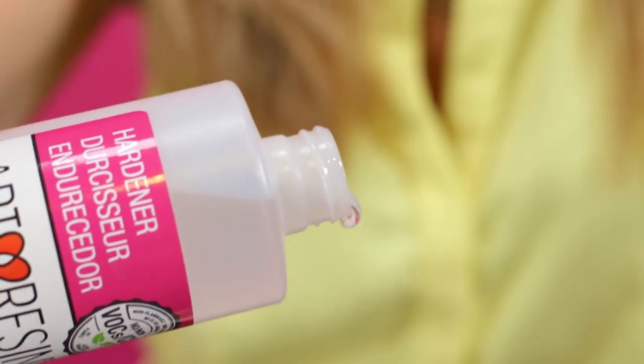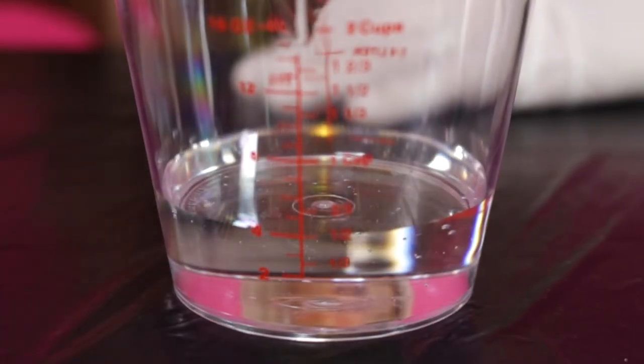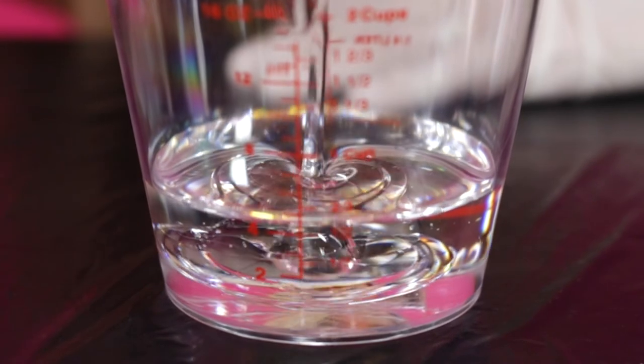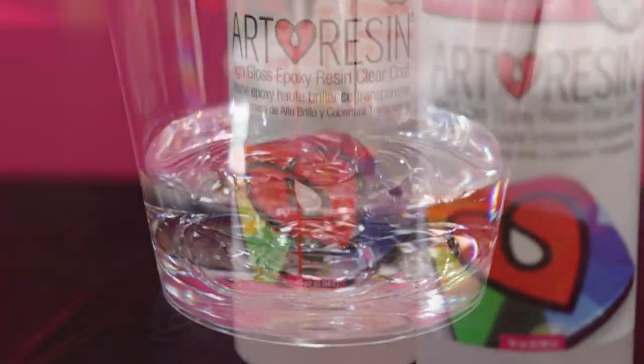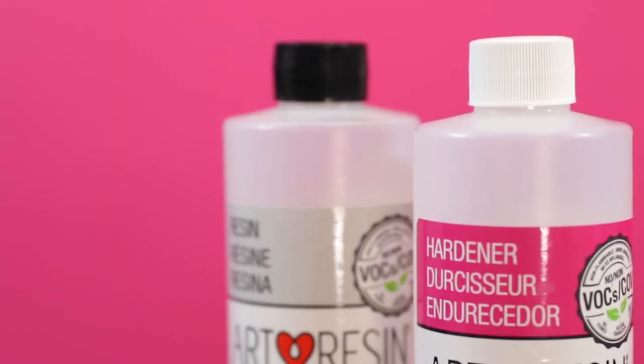With gloves on, pour by volume precisely equal amounts of resin and hardener into a mixing container. Remember to replace the proper cap on each bottle once you're done pouring. Black for resin, white for hardener.